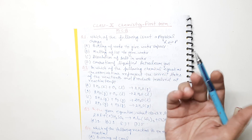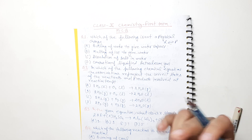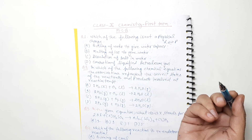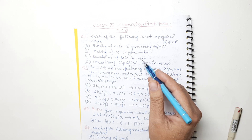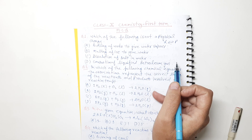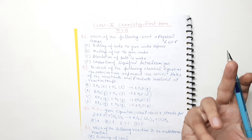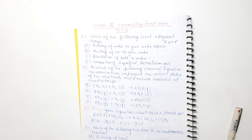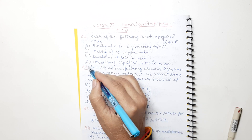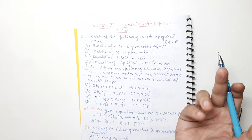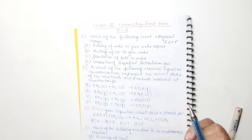So, boiling of water gives water vapor — if you condense the vapor, water is formed again. Melting of ice to give water — freeze it again and ice forms. Dissolution of salt in water — boil the water and salt remains. But combustion of liquefied petroleum gas (LPG) — after burning, it cannot come back into the cylinder as gas. That is not possible. Hence option D is correct — it is an irreversible reaction, meaning it happens but cannot be reversed under any condition.